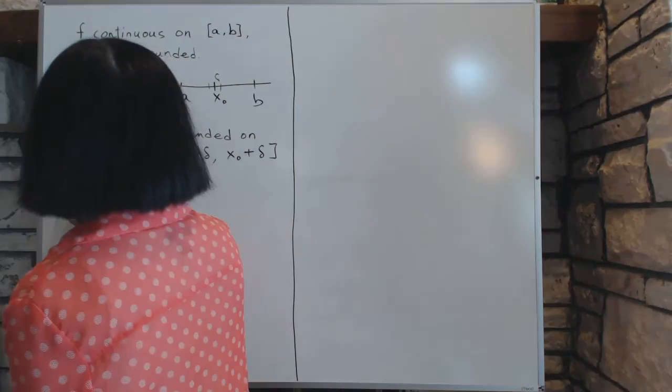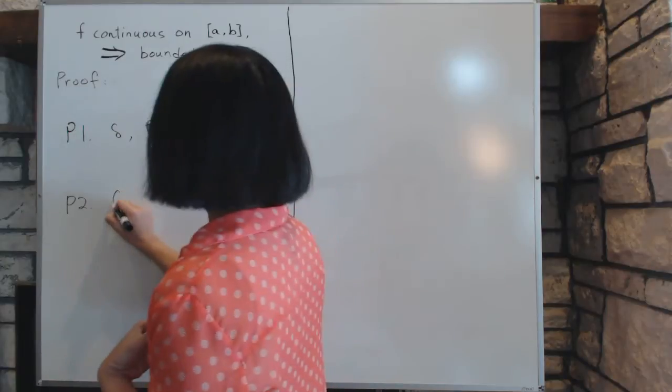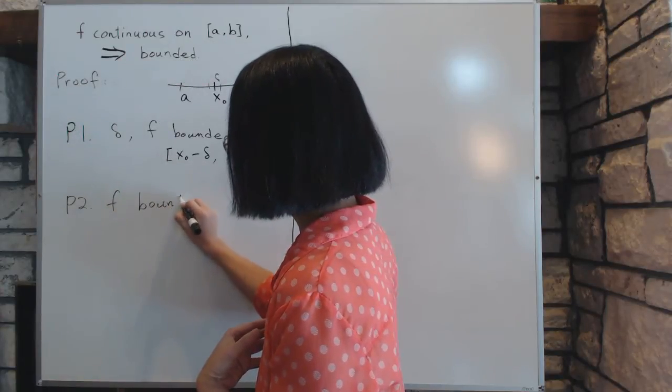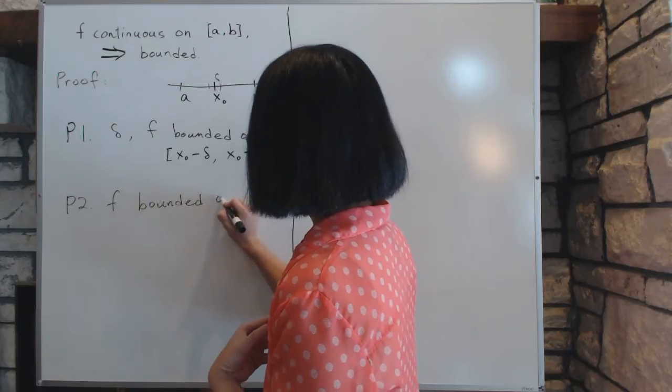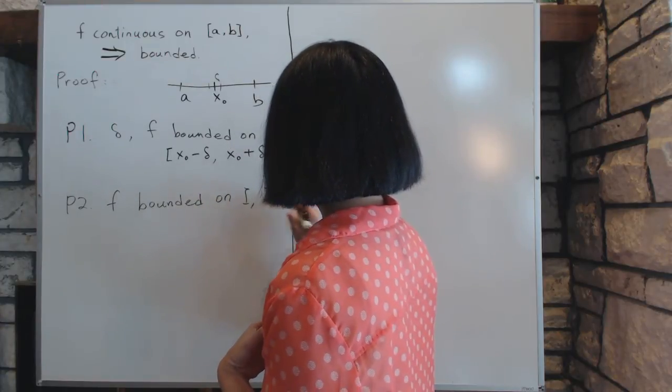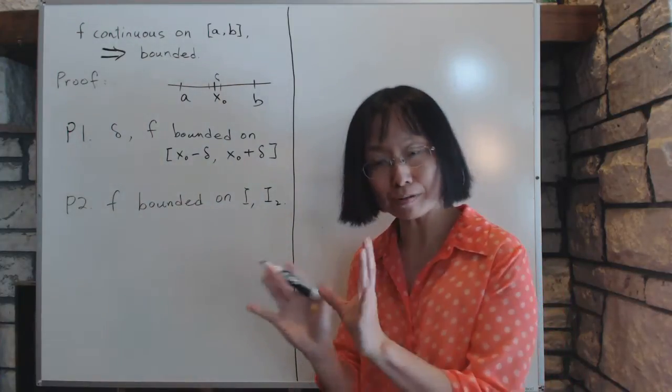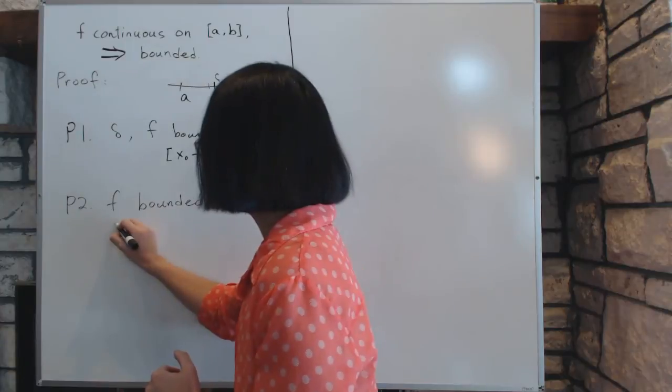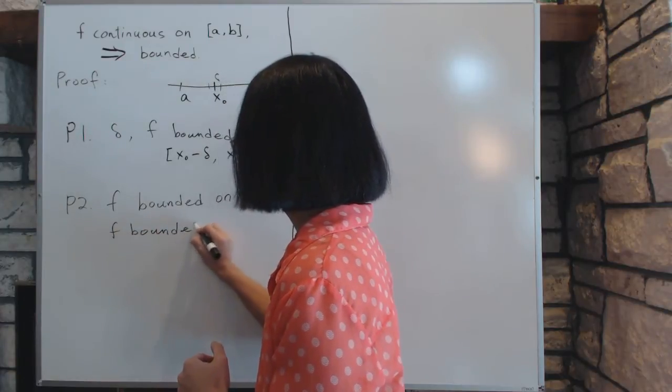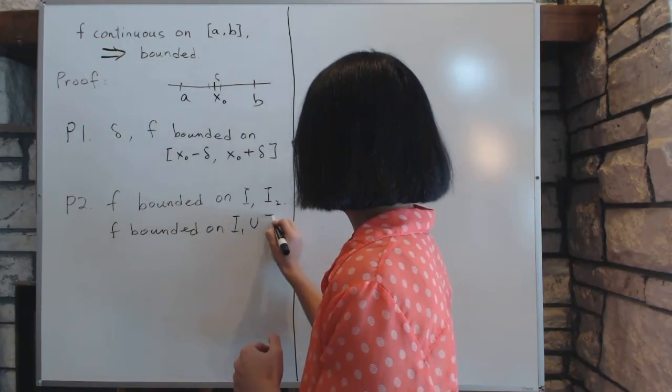The principle number two is that suppose f is bounded on two different intervals. So f is bounded on two intervals, i1 and i2. If that is true, then f is bounded on both of them together. So then f is bounded on i1 union i2.